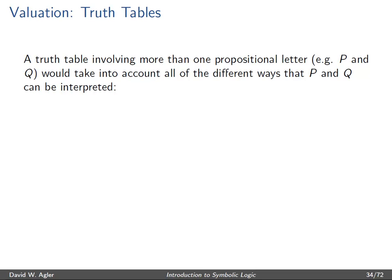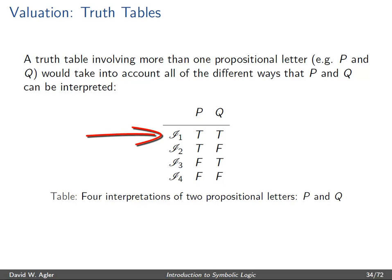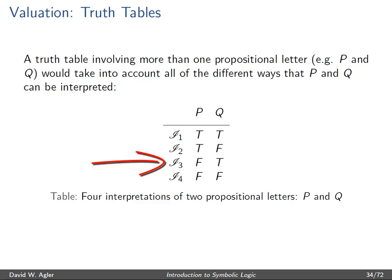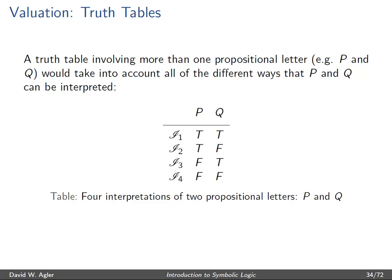If we have a formula involving two propositional letters, we need to account for the four different interpretations — the four different ways P and Q can be assigned truth values: P true and Q true, P true and Q false, P false and Q true, and P false and Q false. This covers all the different ways we could assign truth values to P and Q.